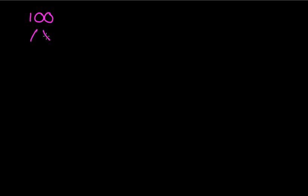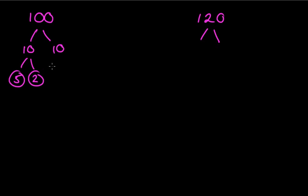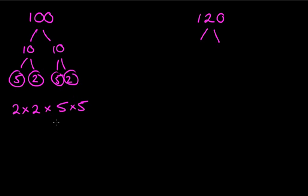Now we're going to look at two larger numbers: 120 and 100. You might want to pause and have a go yourself. If I had to list factors of 100 the long way — 1 and 100, 2 and 50, 4 and 25 — that's a lot of numbers. So let's use a factor tree. For 100, I'll use 10 and 10, then 5 and 2 for each. Very quickly I have my prime factors written out.